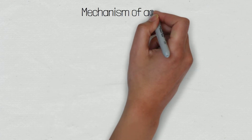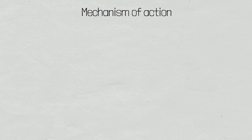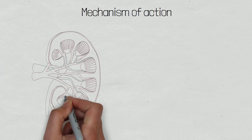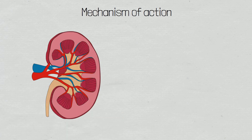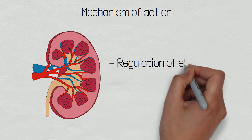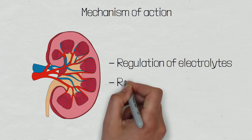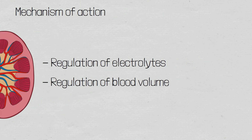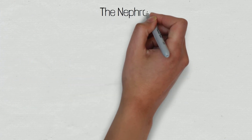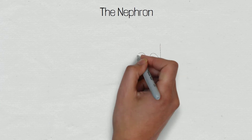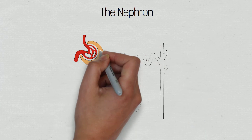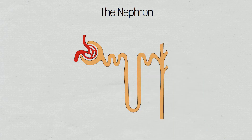So let's now look at the mechanism of action of feruzamide. The kidneys are responsible for several homeostatic processes, which include the regulation of electrolytes and the regulation of blood volume, by conserving or eliminating water. The nephron is the functional aspect of the kidney that is responsible for filtration, reabsorption, secretion and excretion of urine.